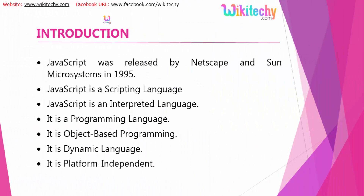JavaScript was released by Netscape and Sun Microsystems in 1995. It is a scripting language. It is an interpreted language. It is a programming language and an object-oriented programming language.